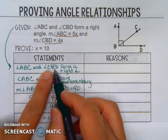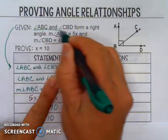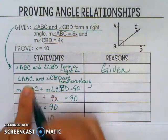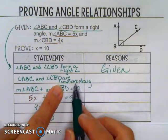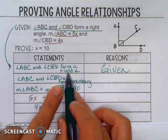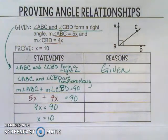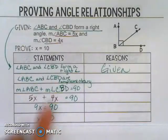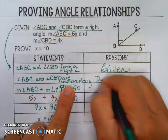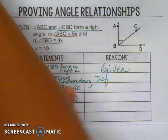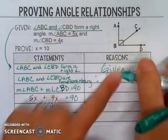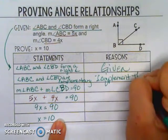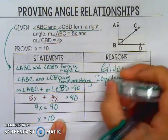Angle ABC and angle CBD form a right angle — that's because it's given at the very beginning. The first reason is almost always given. Angle ABC and angle CBD are complementary. Why? Because we're told they form a right angle. The Complement Theorem says if you have two adjacent angles that form a right angle, they are complementary. So that's our Complement Theorem from the front side.